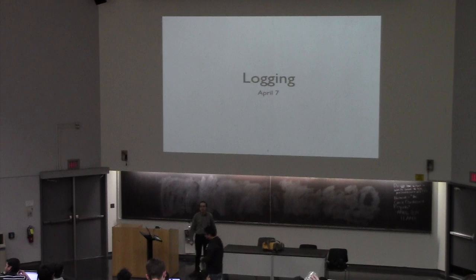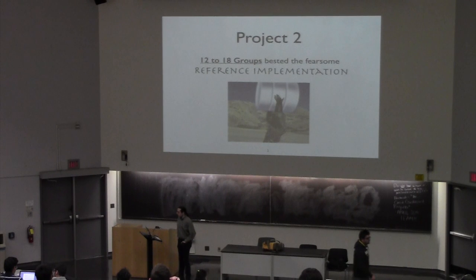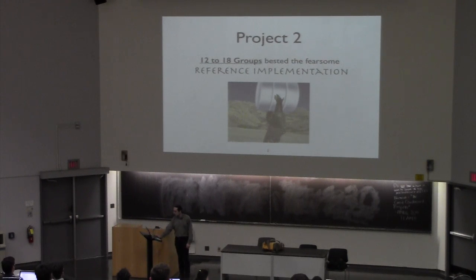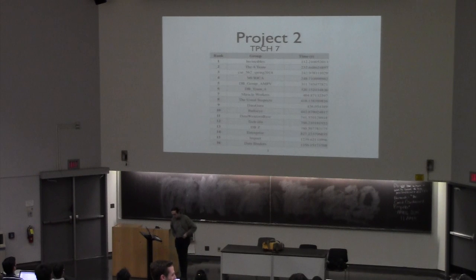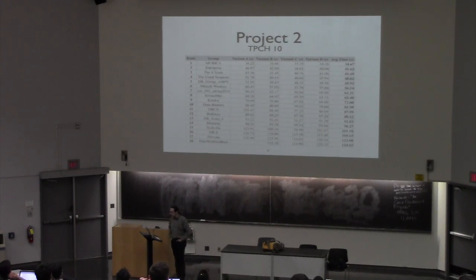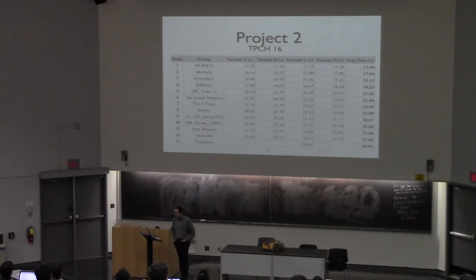Today we're going to continue our discussion of transactions. As people are coming in, the dreaded reference implementation reared its ugly head. As of right now, depending on which test we're talking about, between 12 and 18 groups. The frontrunner is the Invincibles. The frontrunner for TPC-H-10 is Eureka. The frontrunner for TPC-H-12 is Enterprise. And the frontrunner for TPC-H-16 is Eureka.